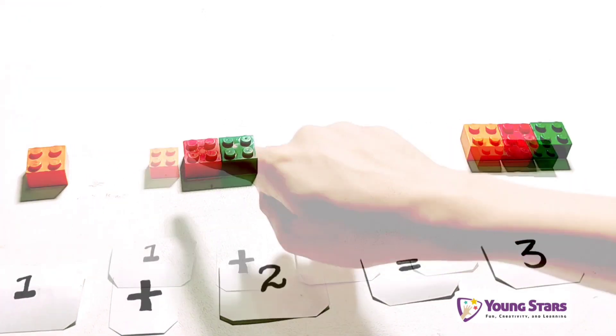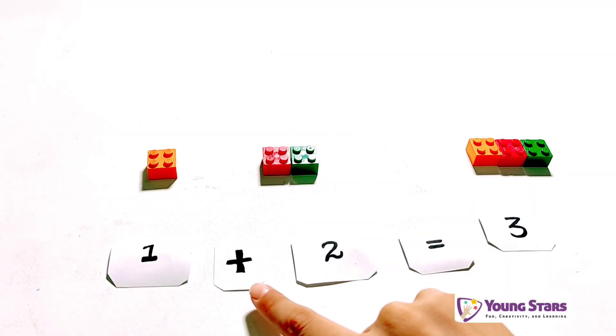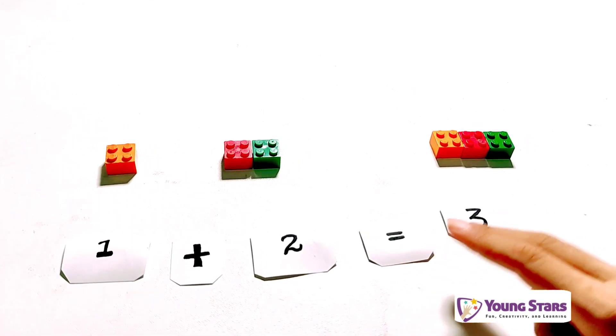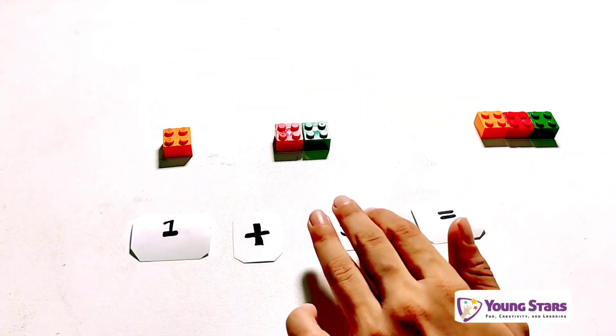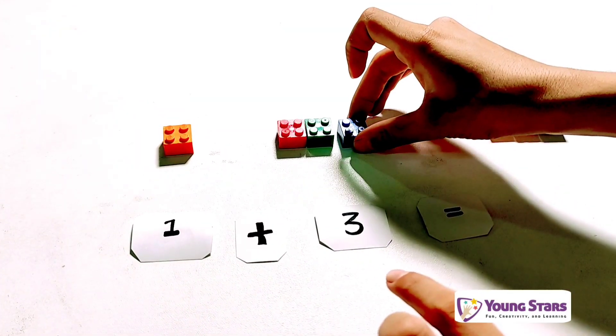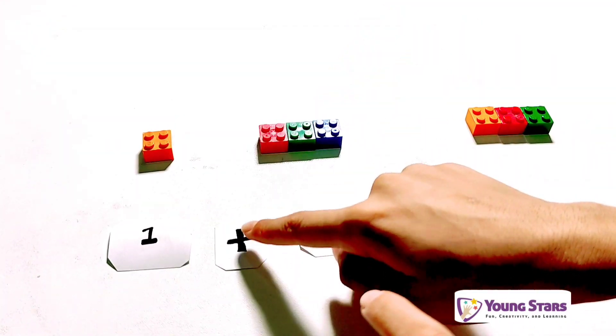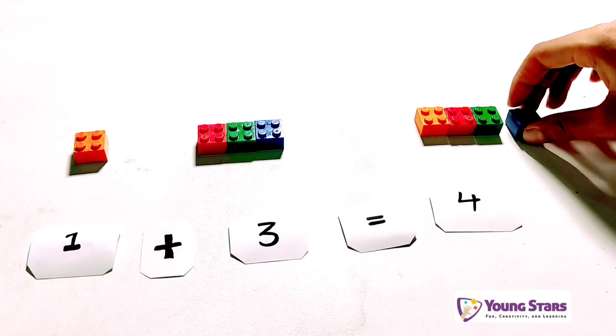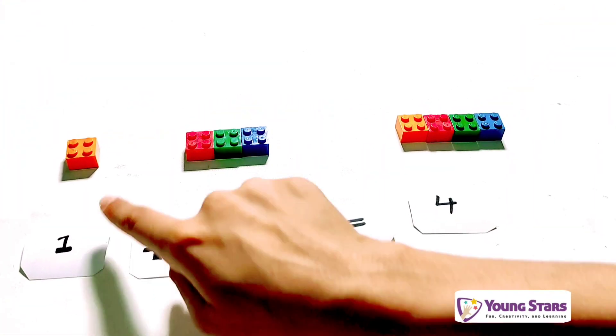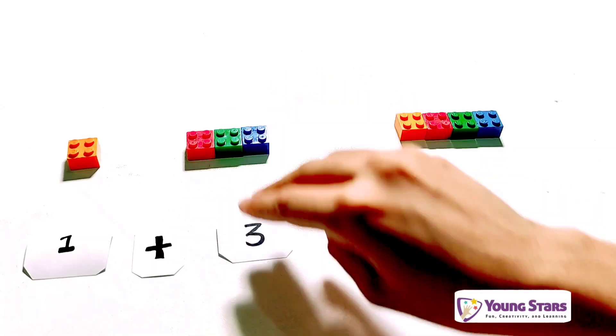So one plus two equals three, right? One plus three equals four. One plus three equals four.